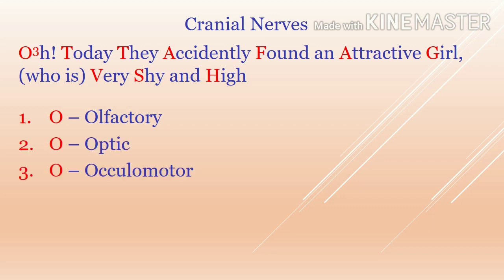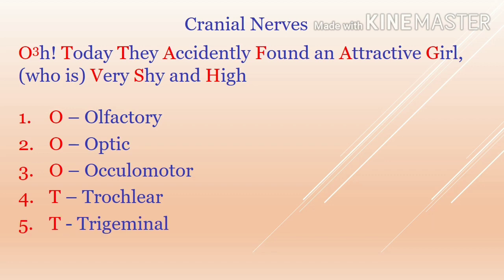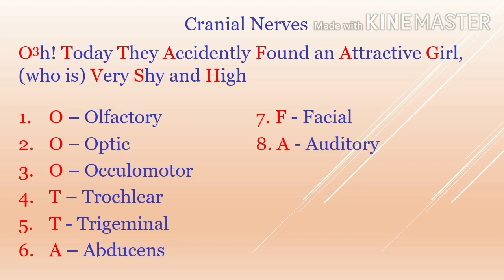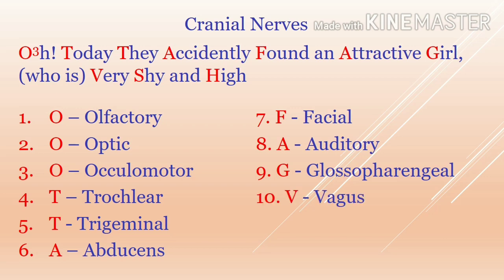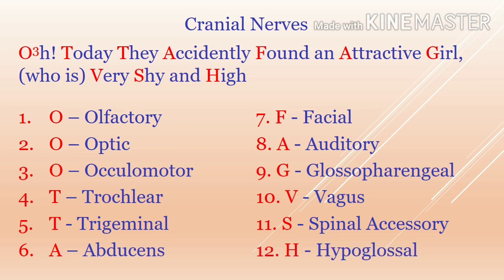oculomotor nerve. Next, T stands for trochlear nerve. Again, T stands for trigeminal nerve. A for abducens nerve. F for facial nerve. A for auditory nerve. G for glossopharyngeal nerve. V for vagus nerve. S for spinal accessory nerve.